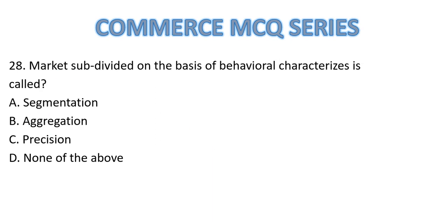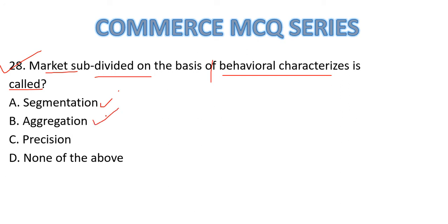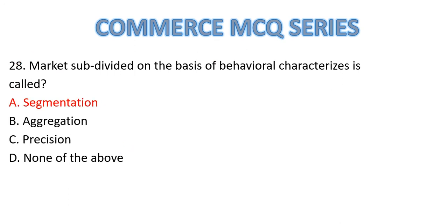Question Number 28: A market subdivided on the basis of behavioral characteristics is called — aggregation, segmentation, or precision? The correct answer is segmentation. This is a straightforward question.